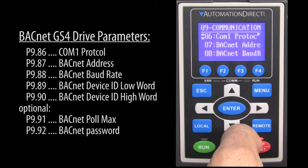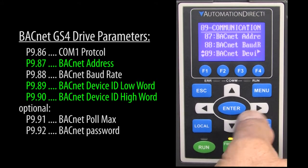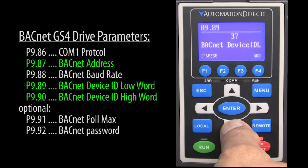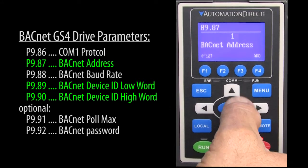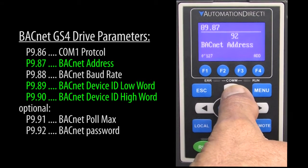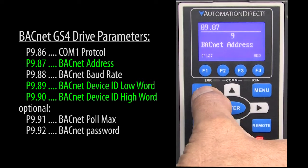You'll want to make sure that the BACnet address and device IDs are unique on your BACnet network. Let's change our ID from the default 10 to 37 and the address to 99, just so it's obvious that we found this device.